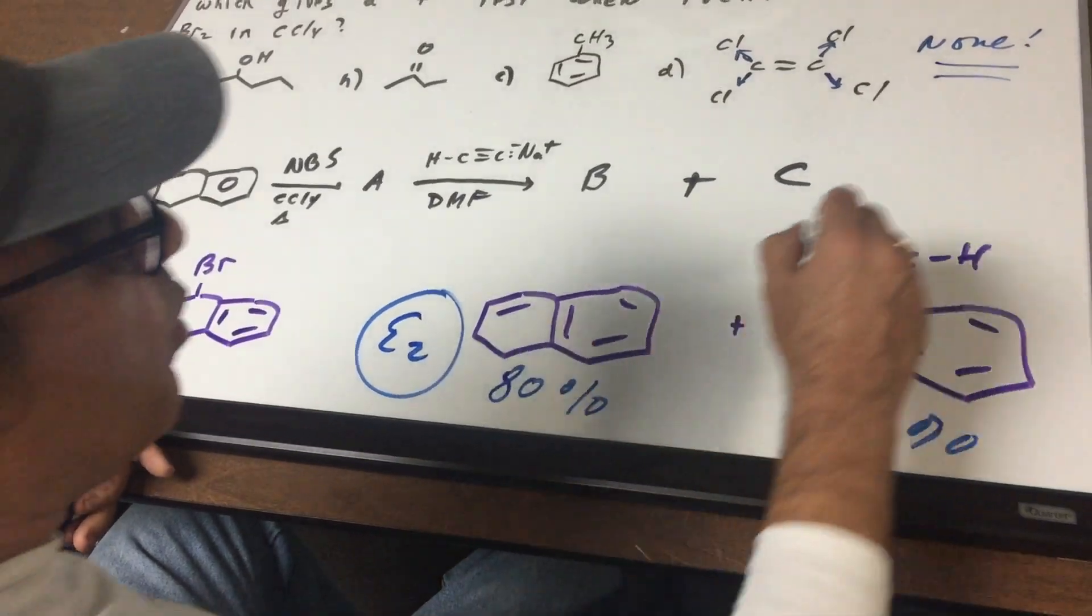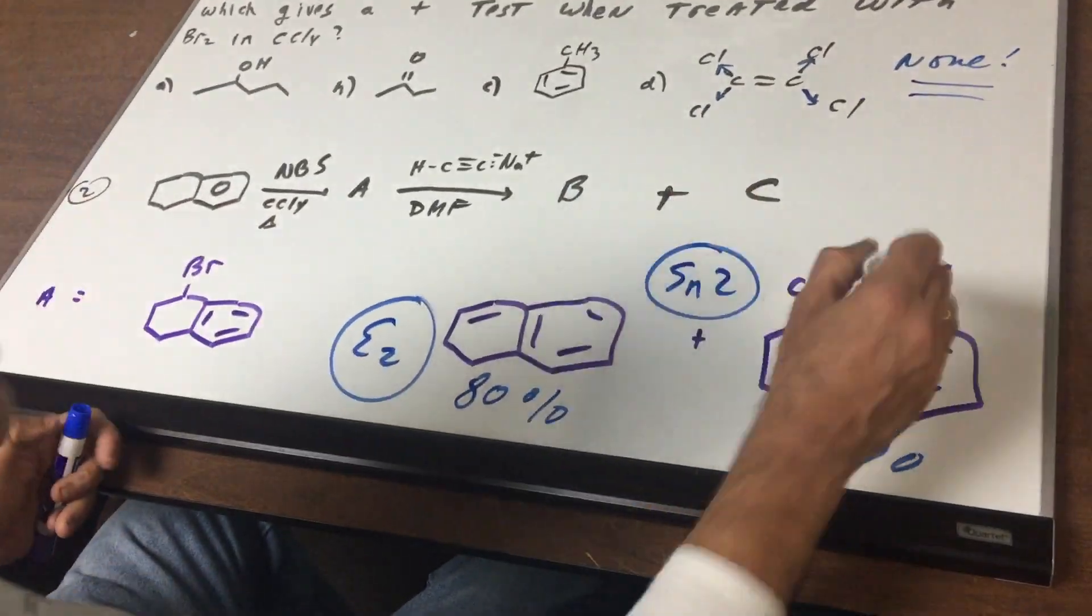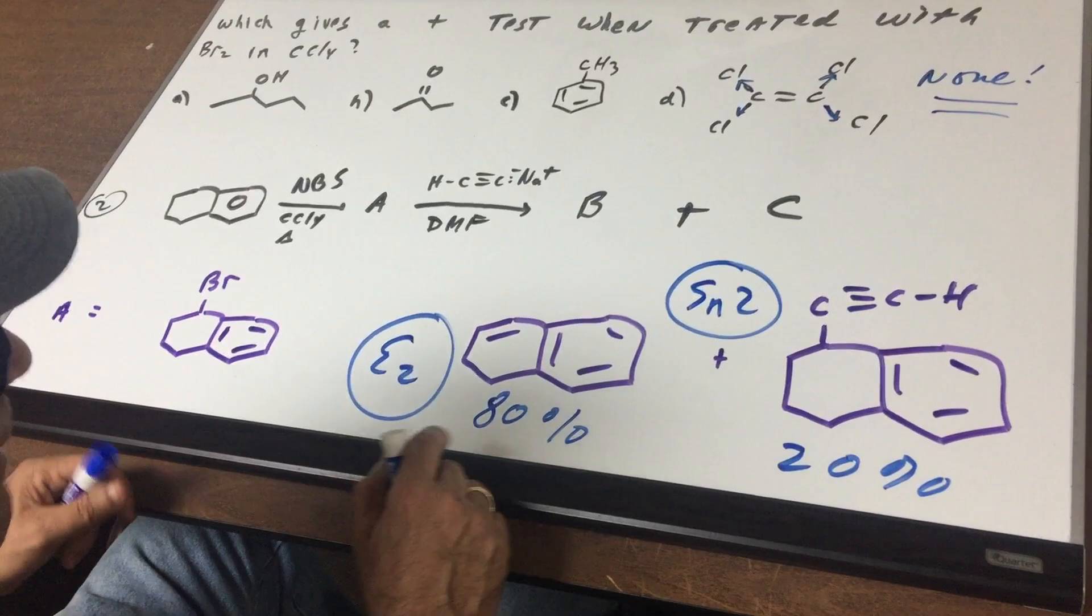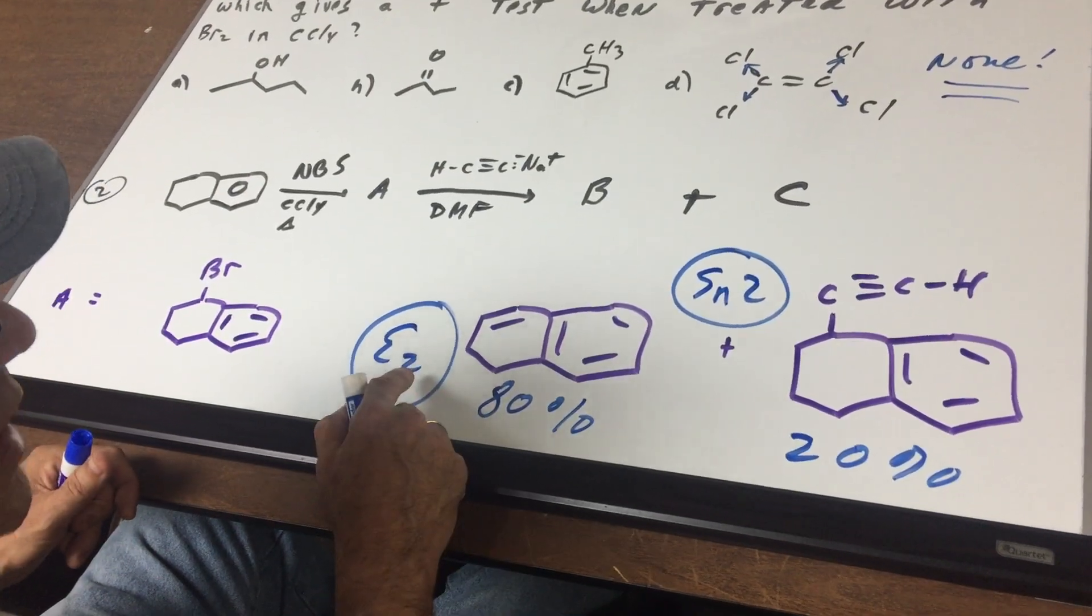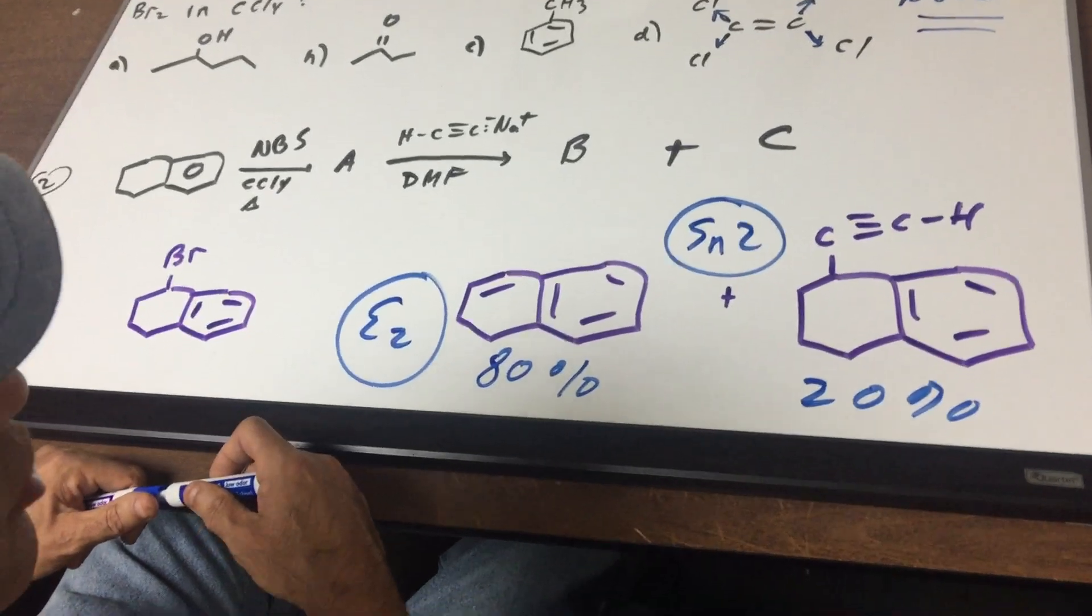Competing against the E2 would be some SN2. So this would be the SN2. When I happened to do the experiment in my lab, 80% was E2 and 20% was the SN2 product. All right, let's do one more I wrote for you.